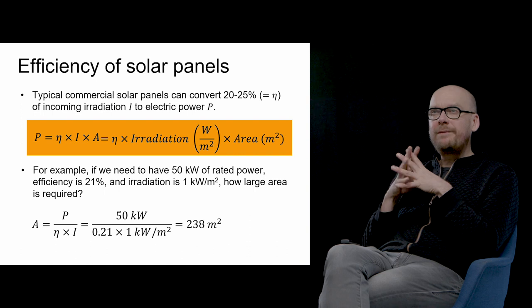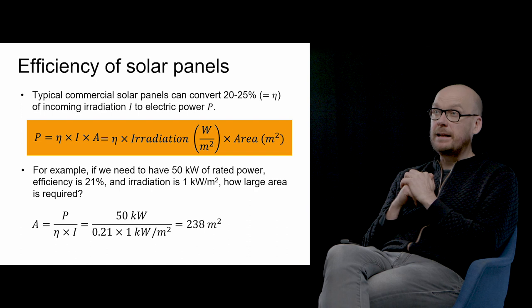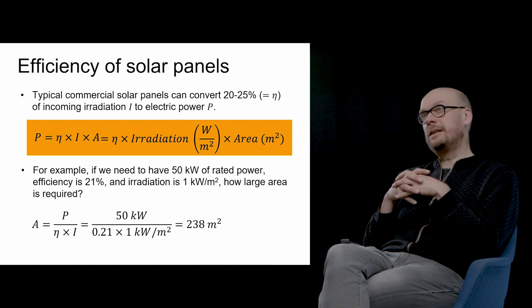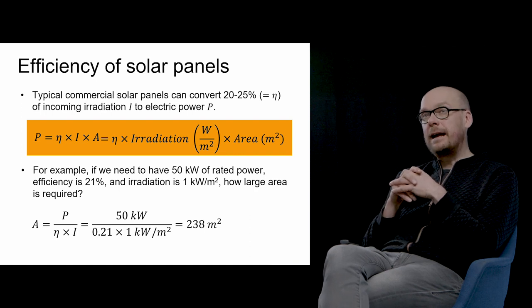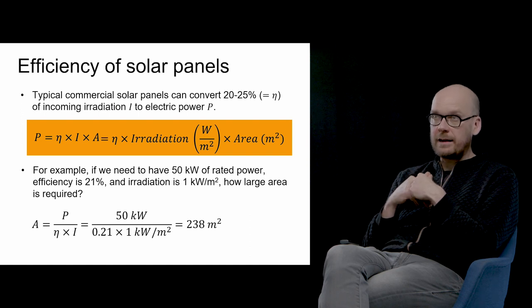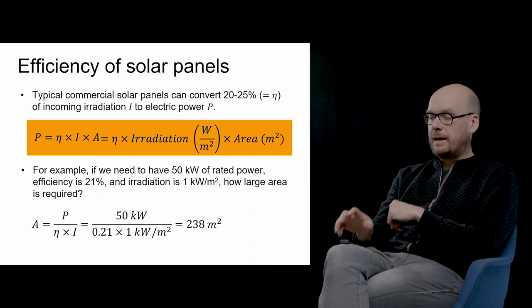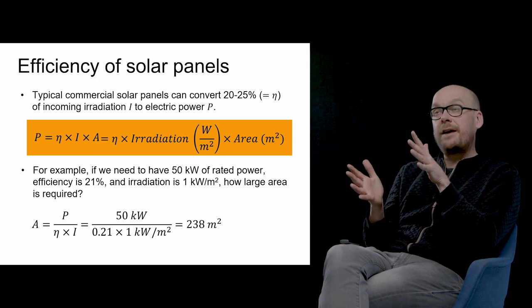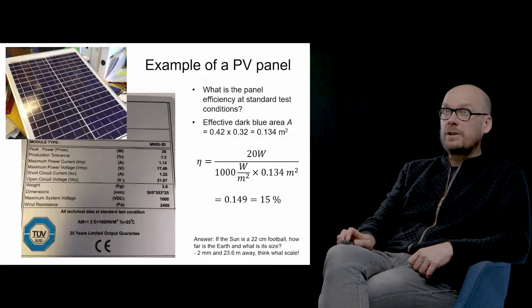As an example, if we need to have 50 kilowatts of rated power, efficiency is 21%, and irradiation is one kilowatt per square meter, how large area is required? Dividing the power by the product of efficiency and irradiation gives us roughly 238 square meters. Quite a large system. This is the panel cell area, so the actual power plant needs to be quite much larger.